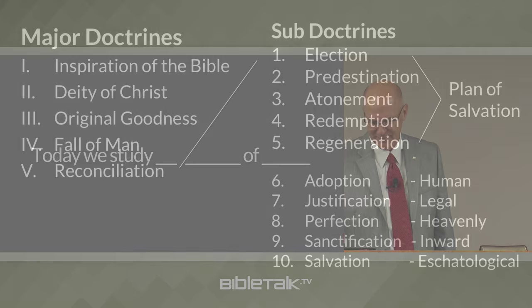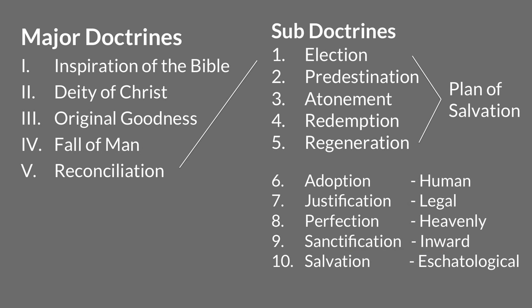Let's take a look at the answers. You've got the whole graph here — well, not all of them. You haven't got all seven major doctrines, but we will eventually. So three of the five that we've studied so far: the five major doctrines we've studied are the inspiration of the Bible, the deity of Christ, original goodness, the fall of man, and then reconciliation. Those are five of the seven major ones. If you're curious, number six is the doctrine of the kingdom, and seven is the doctrine of salvation. We'll get into those a little later on.